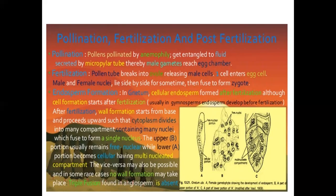The upper portion usually remains pre-nuclear while the lower portion becomes cellular, having multinucleate compartments. The vice versa may also be possible, and in some rare cases no wall formation may take place. Triple fusion found in angiosperms is absent.